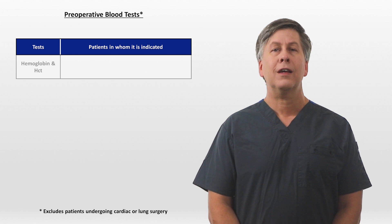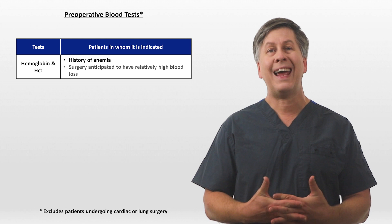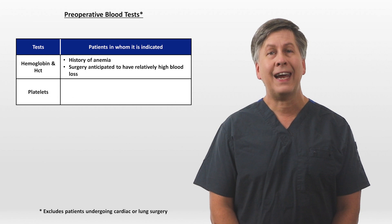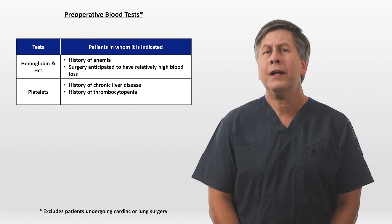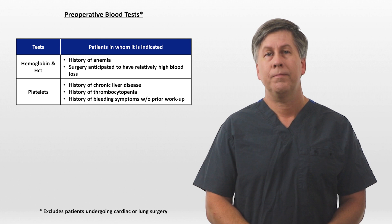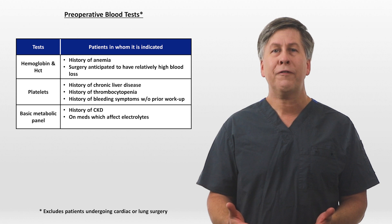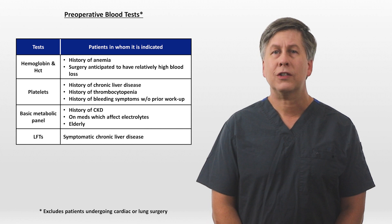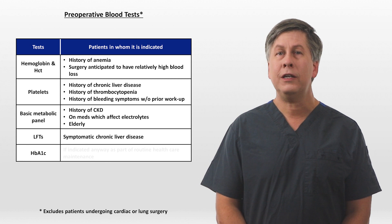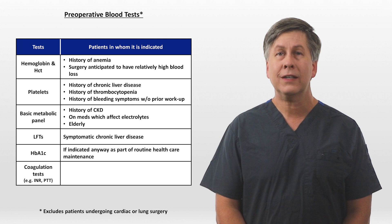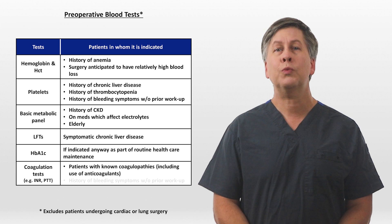Starting with preoperative blood tests: hemoglobin and hematocrit are indicated in patients with a history of anemia and prior to any surgery with expected high blood loss. Platelet count is indicated in patients with chronic liver disease, history of thrombocytopenia, or a history of significant bleeding symptoms without prior workup. A basic metabolic panel is indicated in patients with known chronic kidney disease, those on meds that could affect electrolytes, and possibly in elderly patients. Liver function tests are indicated for symptomatic chronic liver disease; hemoglobin A1c if indicated for routine healthcare maintenance; and coagulation tests (INR and PTT) in patients with known coagulopathies or unexplained bleeding symptoms.